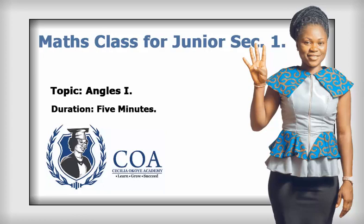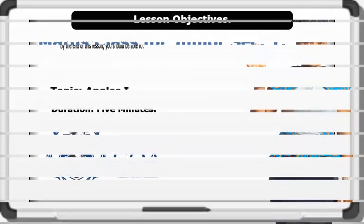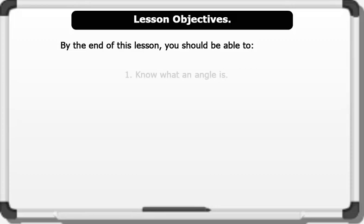Now, let us go through the lesson objectives. By the end of this lesson, you should be able to: 1. Know what an angle is, 2. Identify various angles.